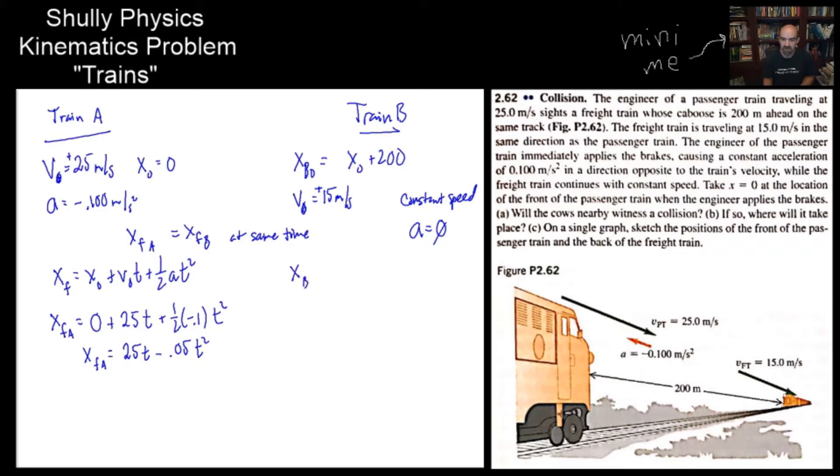So XB final will be XB initial, which is the initial position of train A plus 200. Plus its initial velocity, 15 times T. And then we get plus one half AT squared, but just note that the acceleration is 0. So the whole term there will be 0. So to sum this one up, we've got XB final equals 200 plus 15T.